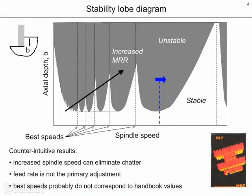This graph shows a stability lobe diagram. On the vertical axis, we have the axial depth of cut in milling. On the horizontal axis, we have the commanded spindle speed. We see that the plot is divided into two regions: a gray region, which indicates axial depth-spindle speed combinations that will give chatter, and a white region, which identifies axial depth-spindle speed combinations that will lead to stable operation. We see that there are particular spindle speeds where increased axial depth of cut can be achieved.